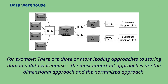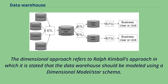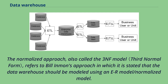There are 3 or more leading approaches to storing data in a data warehouse. The most important are the dimensional approach and the normalized approach. The dimensional approach refers to Ralph Kimball's approach, in which the data warehouse should be modeled using a dimensional model or star schema. The normalized approach, also called the 3NF model, refers to Bill Inmon's approach, in which the data warehouse should be modeled using an ER model or normalized model.